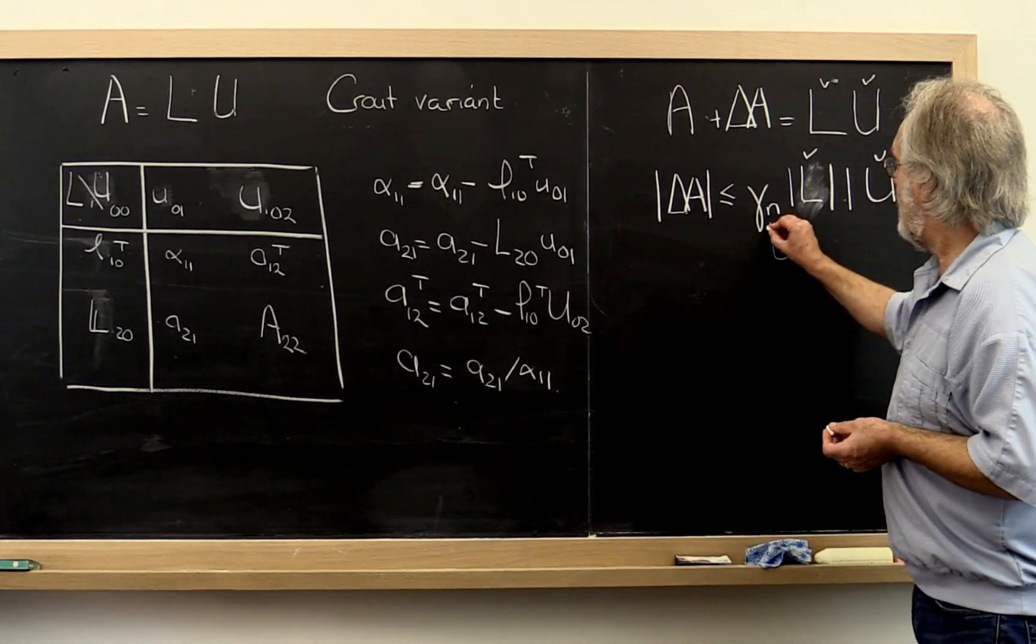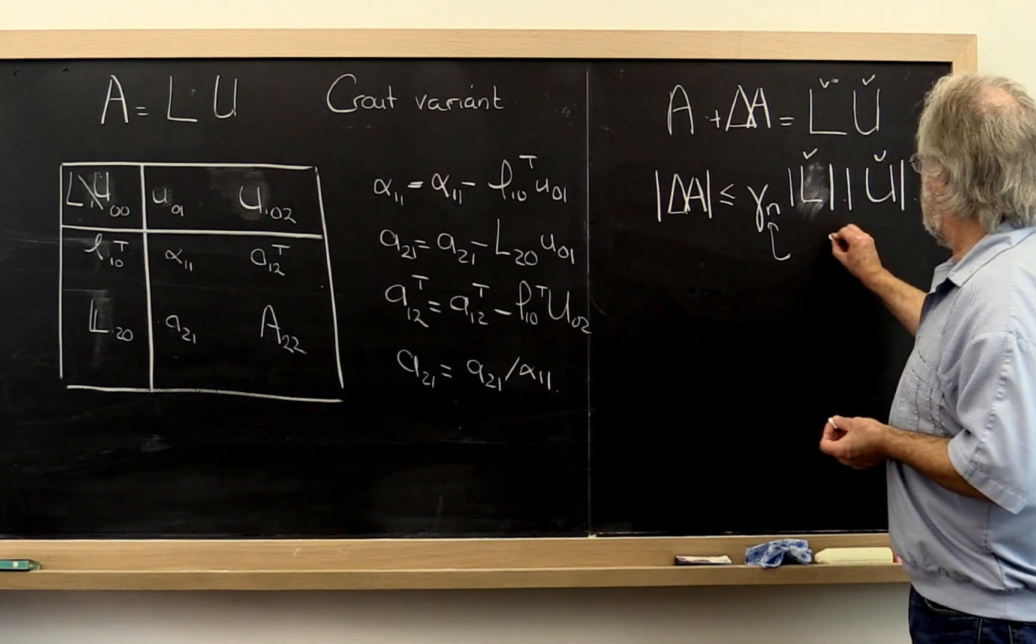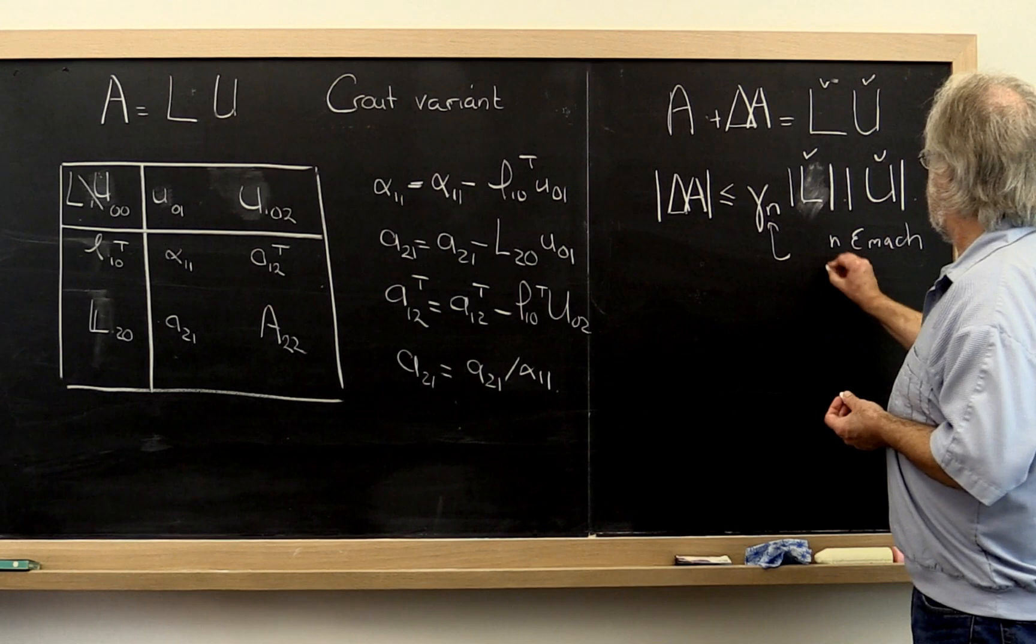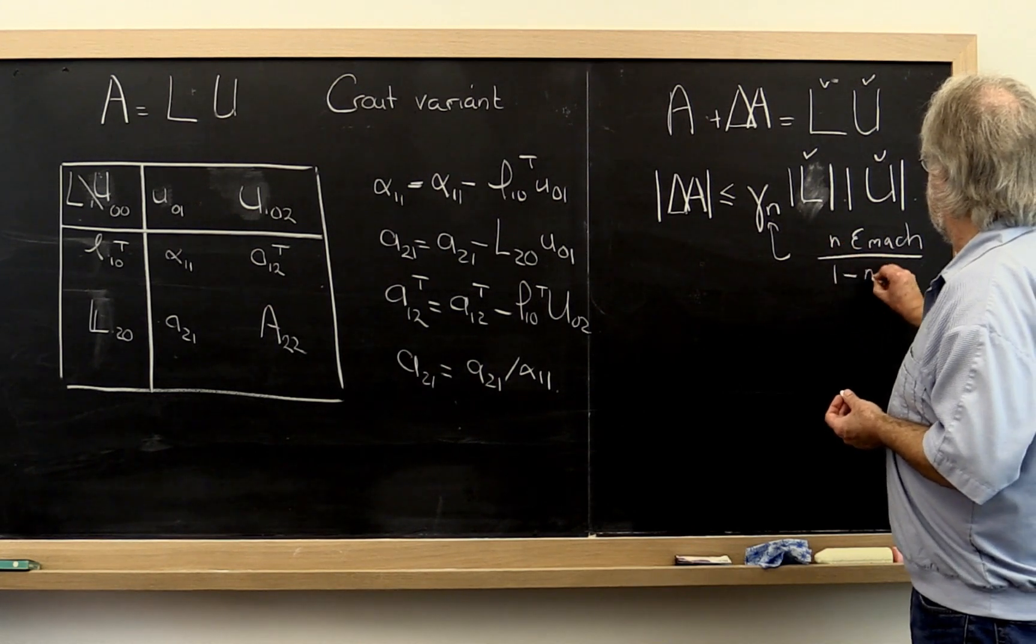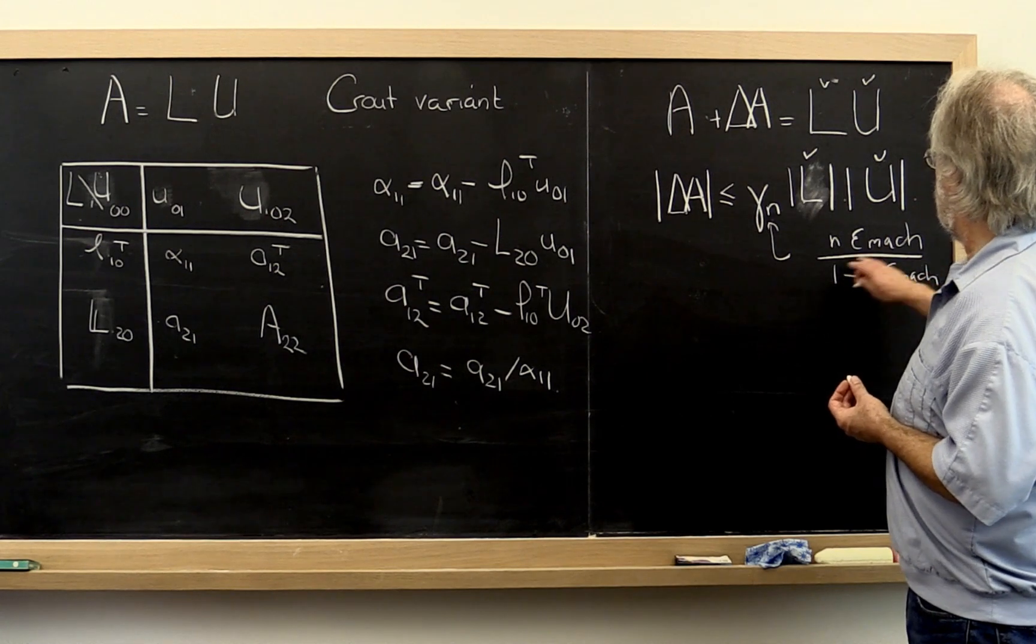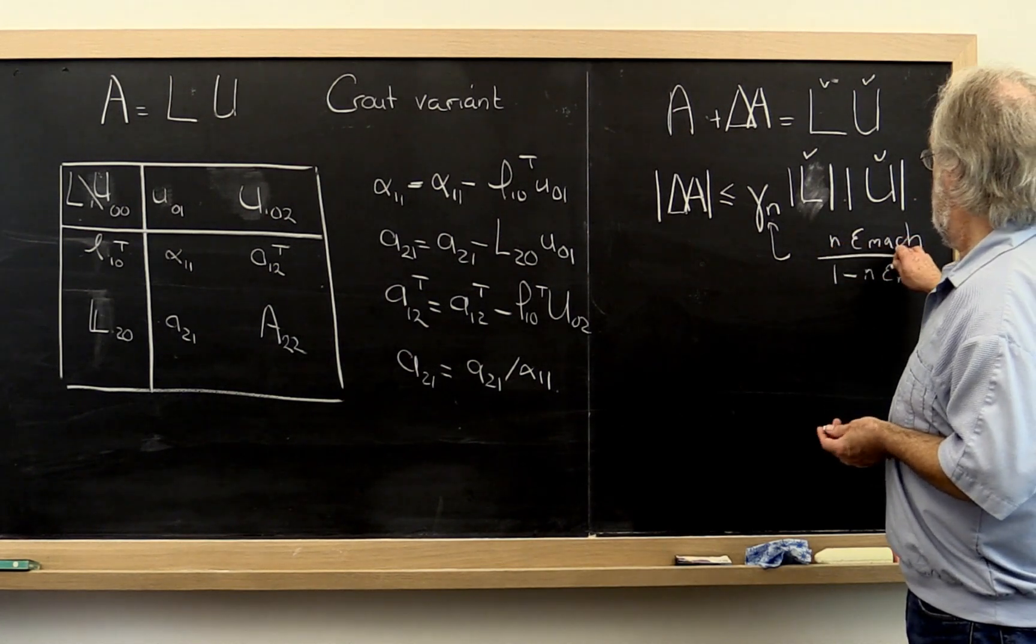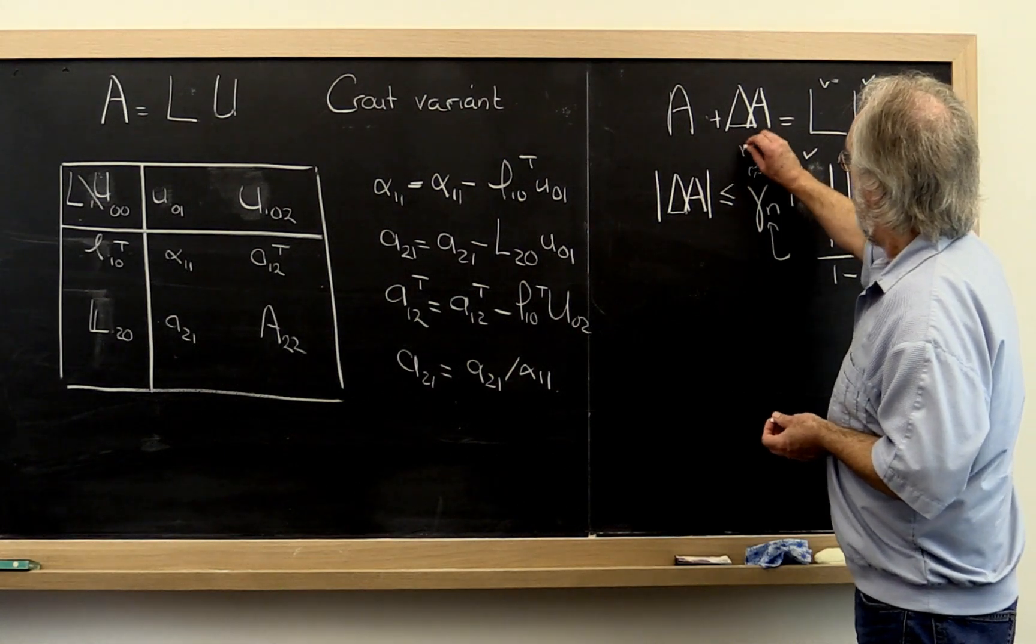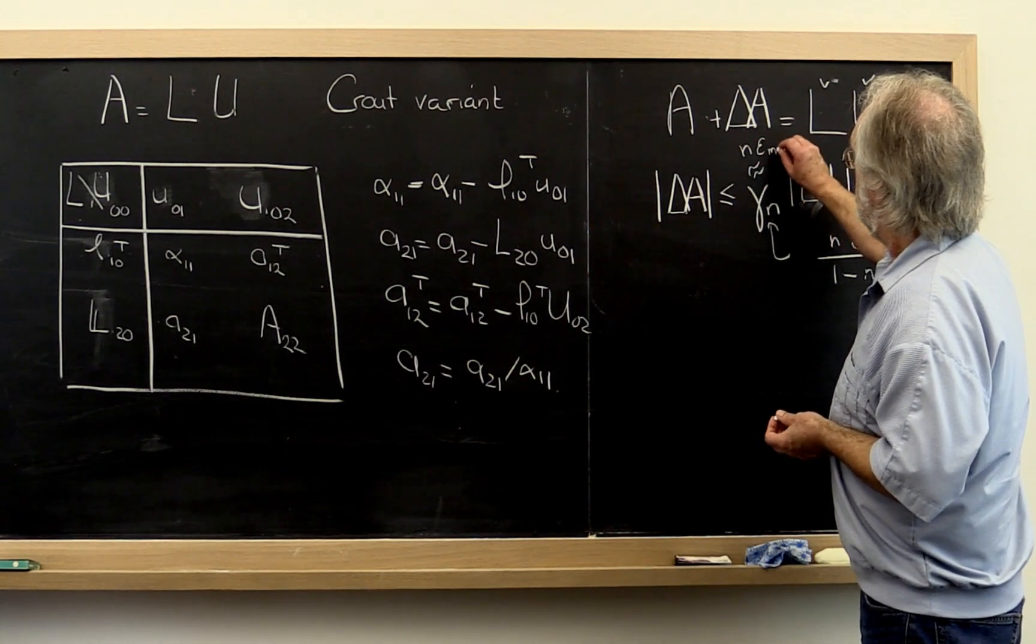And remember that gamma n is this magic number n times the machine epsilon divided by 1 minus n times the machine epsilon. And if n is small enough, that's roughly n times the machine epsilon.